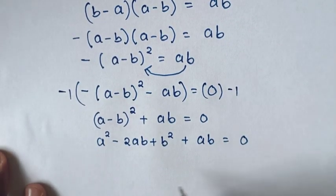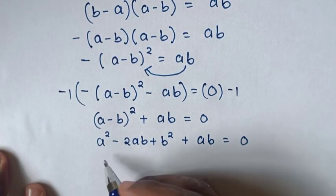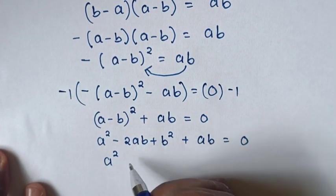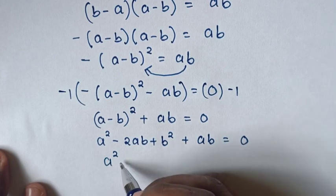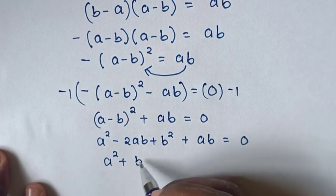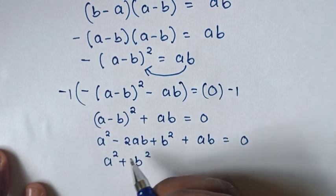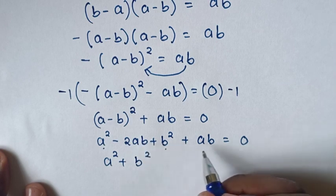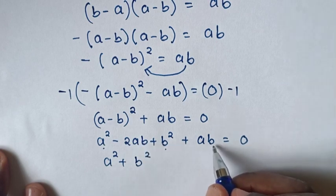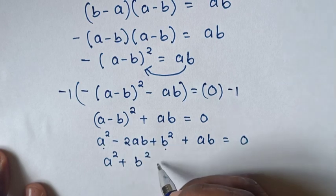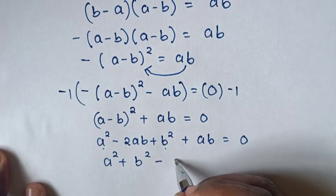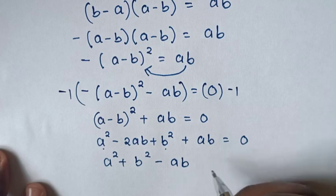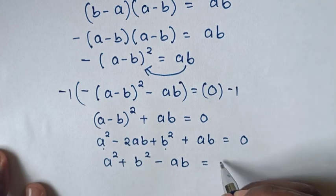Then here it will be negative 2ab plus ab, which gives negative ab. So we have a squared plus b squared minus ab is equal to 0.